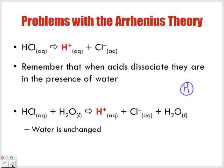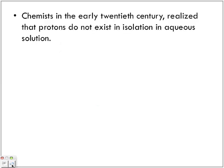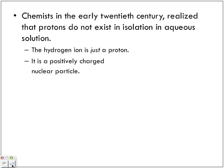That's really where the question is, and what we're going to also see is protons really don't remain in these type of aqueous solutions as is. Chemists in the early 20th century realized that protons do not exist in isolation in aqueous solutions. So they can't dissociate that way. So where do they go? That's really what we're going to be looking at right now. The hydrogen ion is just a proton. It is a positively charged nuclear particle. No neutrons, no electrons, just that one proton.